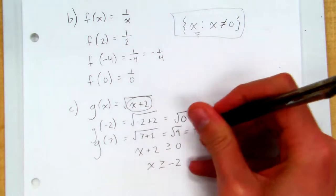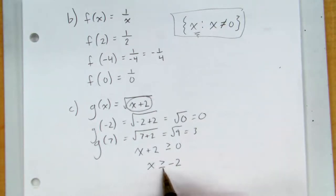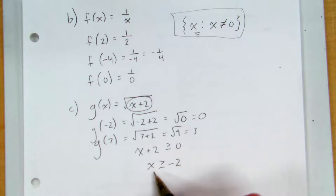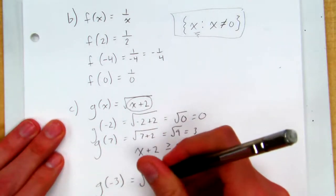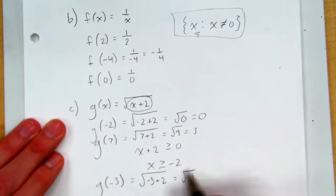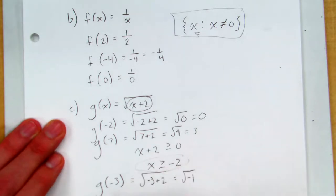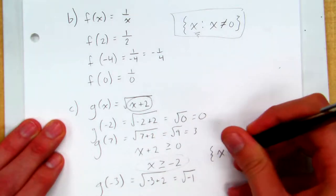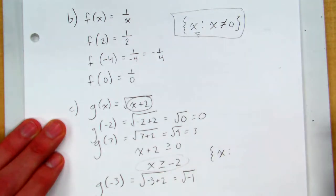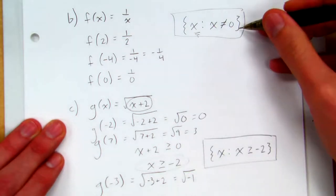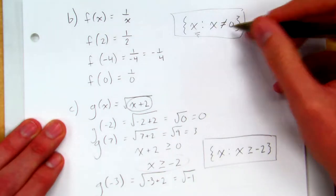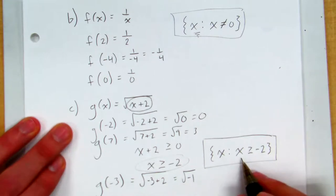For example, g of 7 equals the square root of 7 plus 2, which is the square root of 9, which is 3 — valid. I can even plug in negative 2 itself and I get zero. But if I plug in a number less than negative 2, like negative 3, I get the square root of negative 3 plus 2, which is the square root of negative 1 — and that does not exist. So my domain written in set notation is: x such that x is greater than or equal to negative 2.